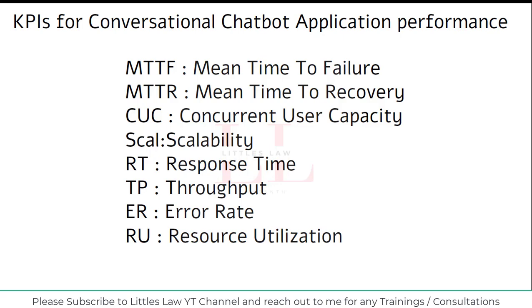Error rate tracks the frequency of failed or irrelevant responses provided by the chatbot. It is calculated as the ratio of incorrect responses to the total number of interactions — for example, one error out of 100 interactions equals a 1% error rate. This metric helps identify issues with the chatbot's accuracy and reliability. We always aim for zero percent error rate, though errors must be flagged and fixed.